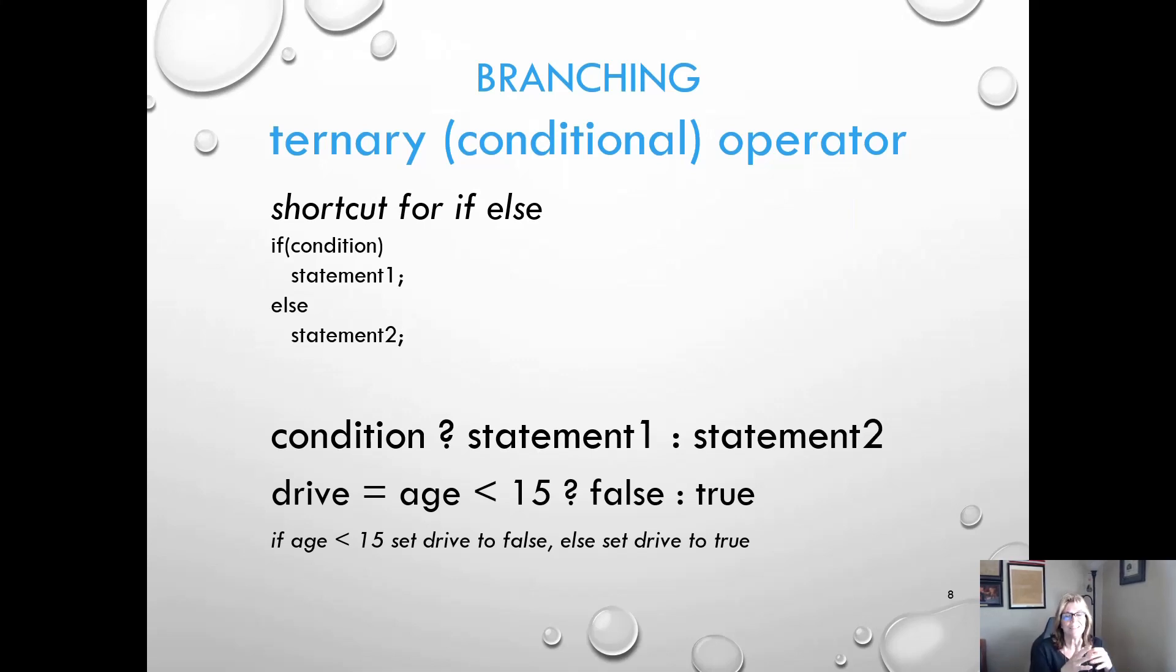Here's an example: we're going to say drive equals, and then the condition is age less than 15. If that condition is true—if your age is indeed less than 15—then drive is going to become false, as in no, you cannot drive. Otherwise, drive will become true because yes, you can drive. So that's an example of the ternary operator, also known as the conditional operator.